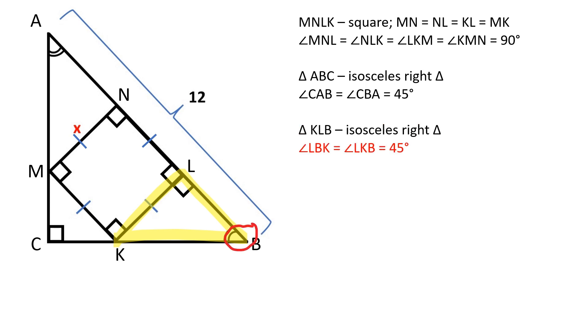since angle LBK is equal to 45 degrees, angle LKB is also equal to 45 degrees. Therefore KL is equal to LB and equals X. It's the same situation with triangle MAN,